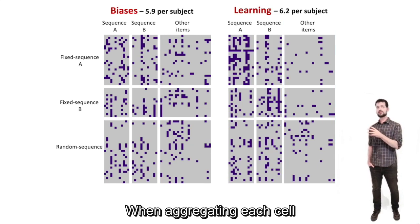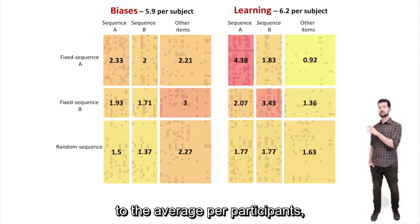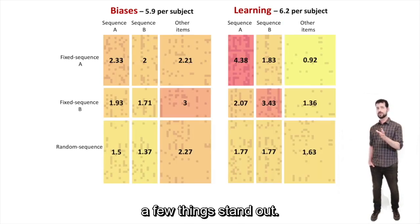Finally, in the leftmost columns are triplets corresponding to sequence A, in the middle triplets corresponding to sequence B, and on the right other triplets which belong to neither. When aggregating each cell to the average per participant, the darker the color, the higher the average, a few things stand out.